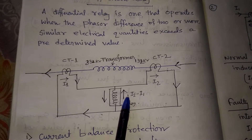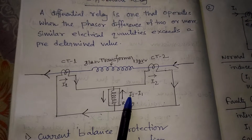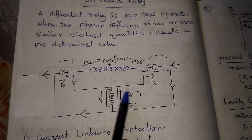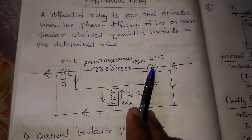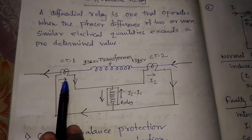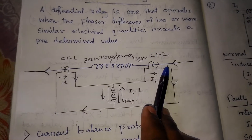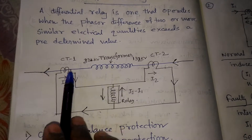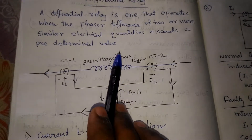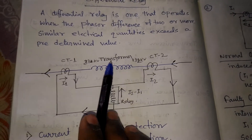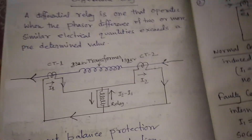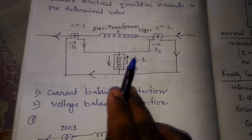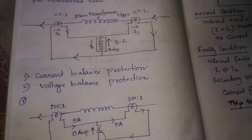This is the basic principle of differential relay — we measure the difference of current between the primary and secondary winding or secondary circuit of transformers, alternators, and very highly costly electrical equipment.